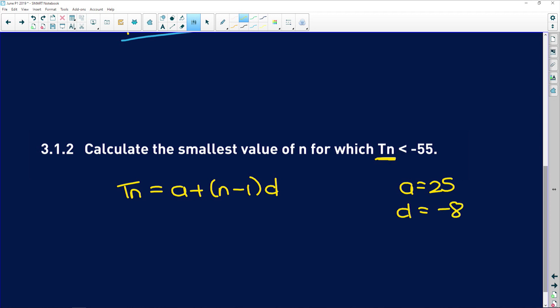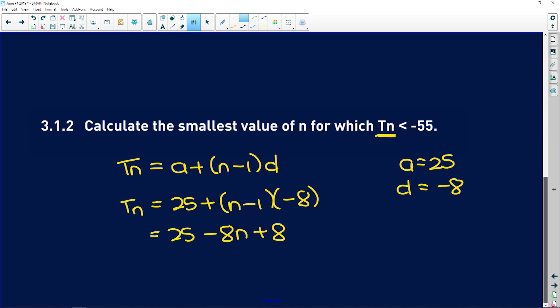So now tn is equal to a, which is 25, plus (n minus 1) multiplied by negative 8, and that is going to give us 25 minus 8n plus 8. If we further simplify, we're going to get negative 8n plus 33. So we have tn.